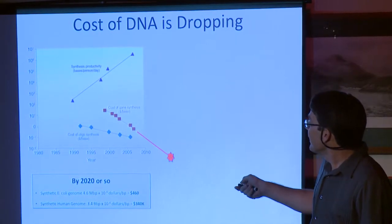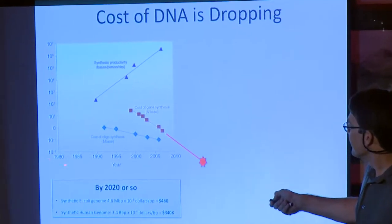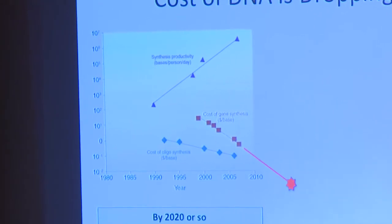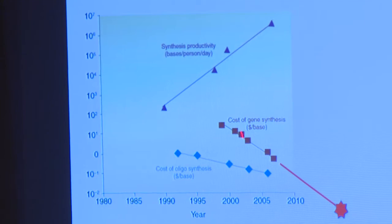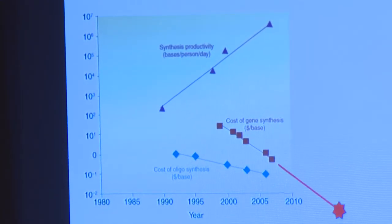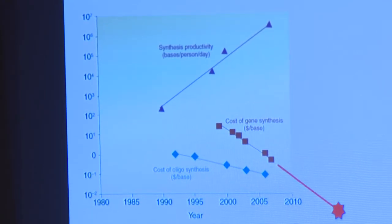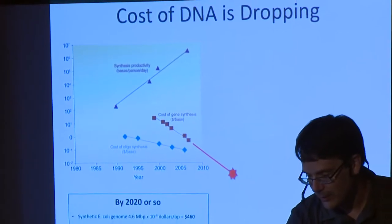This is a plot in a log scale, which is 10 times less than that one, over the years of how much it costs to build DNA and to build genes and how much DNA people are making in bases per person per day in various labs around the world. If you extrapolate this down, then by somewhere around 2020, you could make a whole synthetic bacterial genome for like 350 bucks. You could make an entire human genome for something like the price of a house. That's how much DNA you could make. So those are the kinds of issues that are coming up. And people are programming with this stuff and playing with it and trying to figure out what to do.